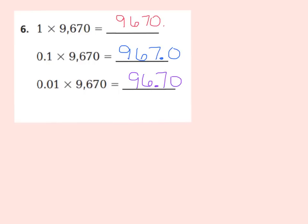Okay, boys and girls. This is what you should have had. You should have had 1 times 9,670 is 9,670. 1 tenth of 9,670 is 967. 1 hundredth of 9,670 is 96 and 7 tenths, or 96 and 70 hundredths. I hope our answers matched.